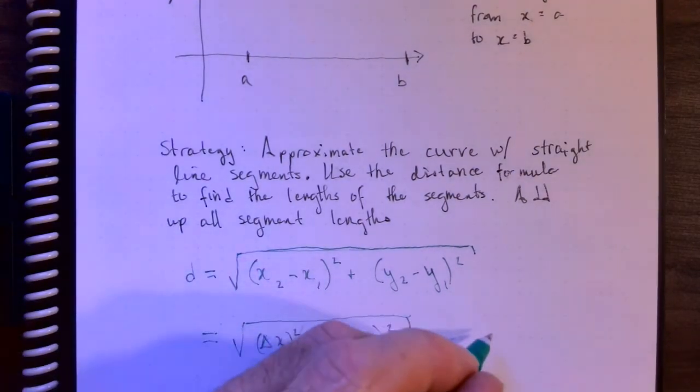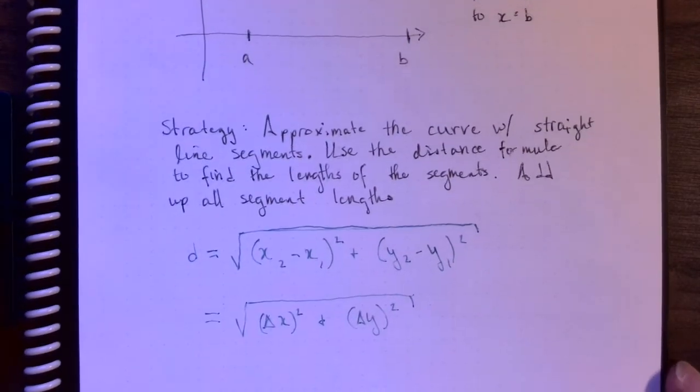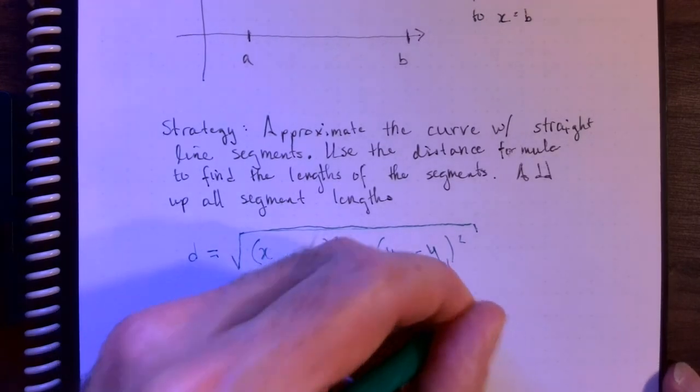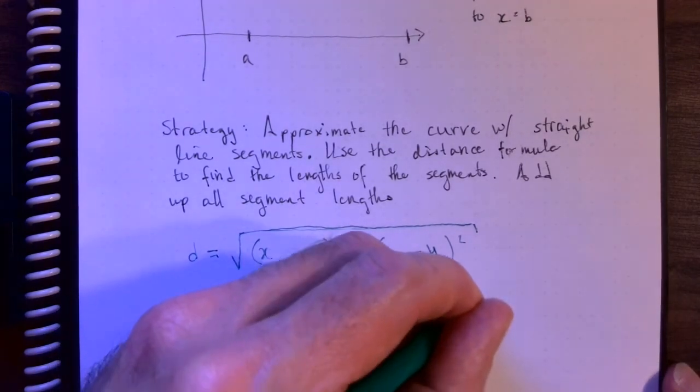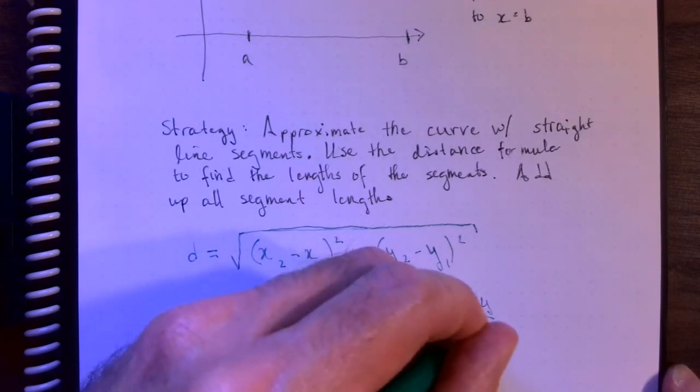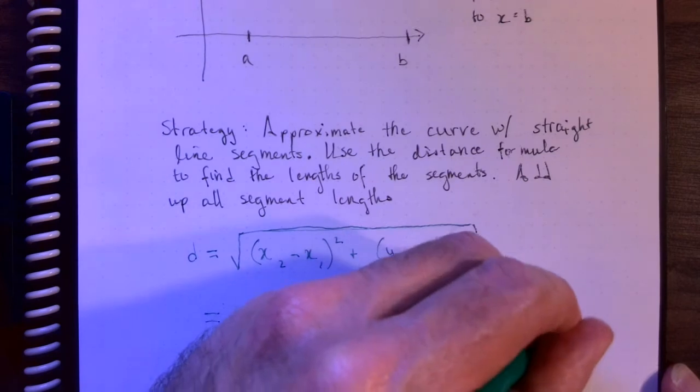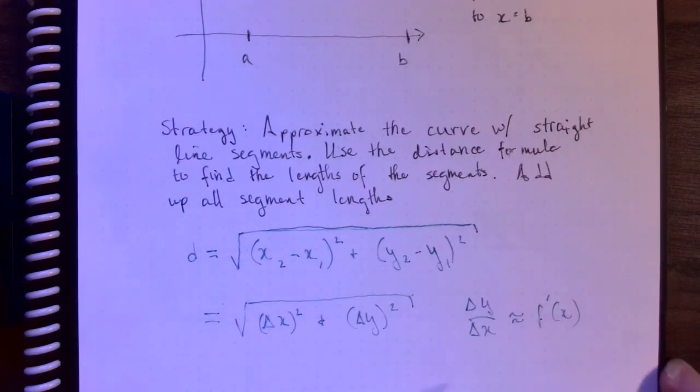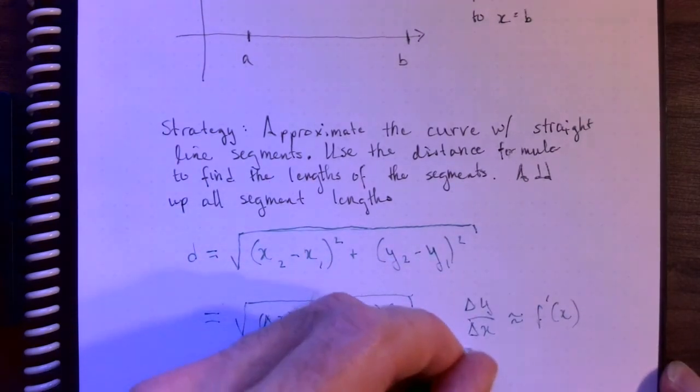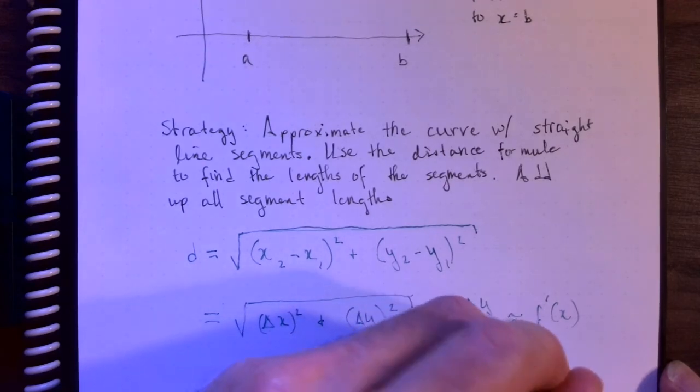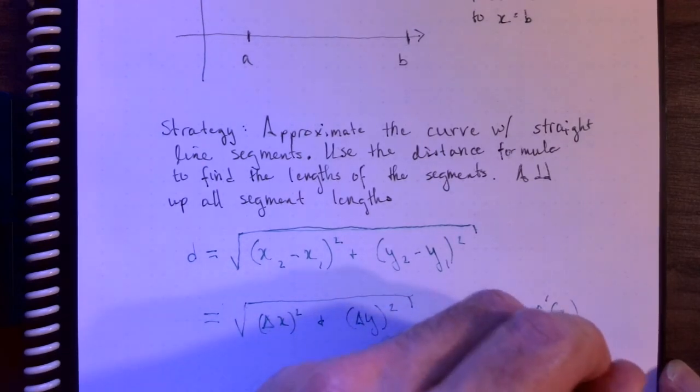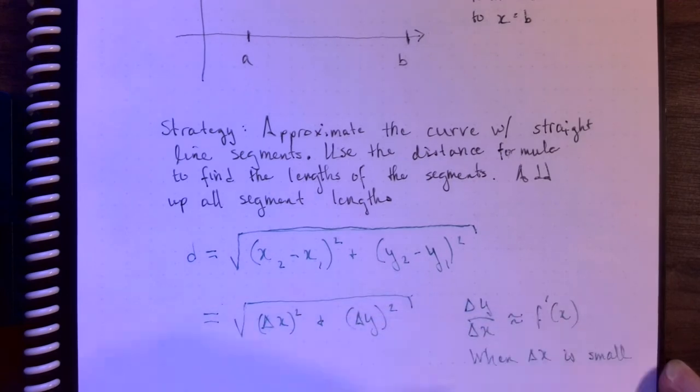Now, something that we know from our calculus class is that delta y over delta x is basically the derivative, provided delta x is small.